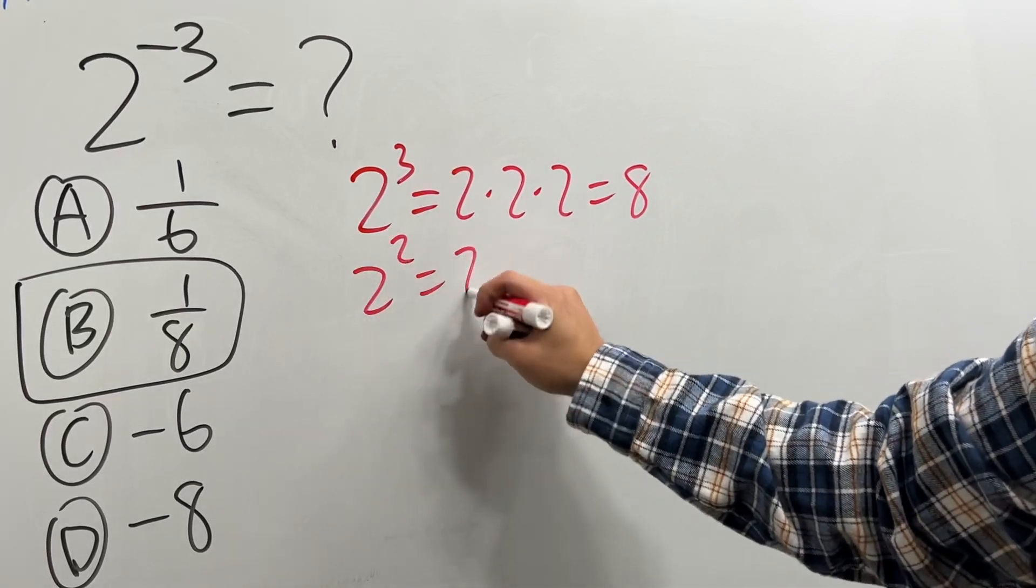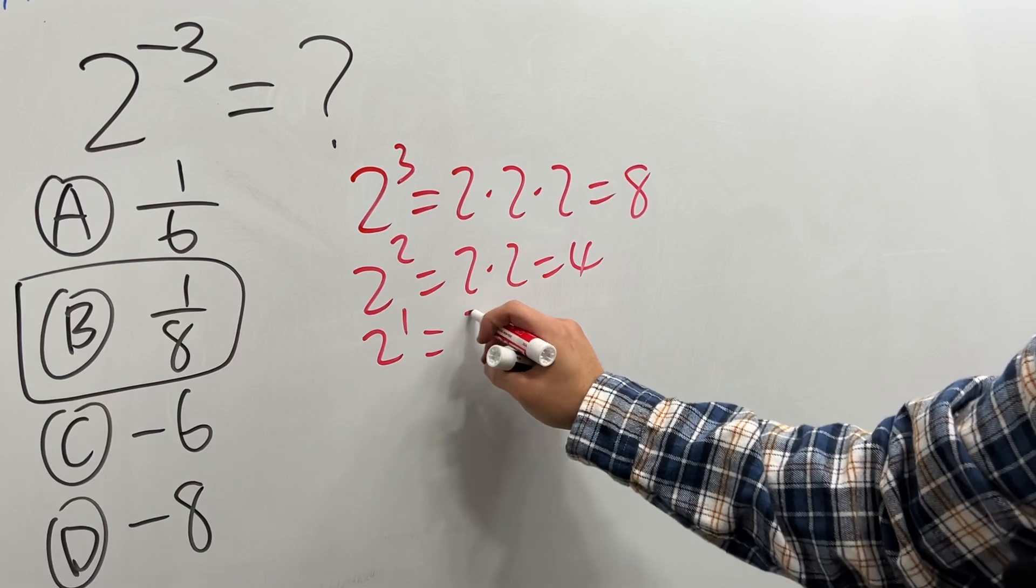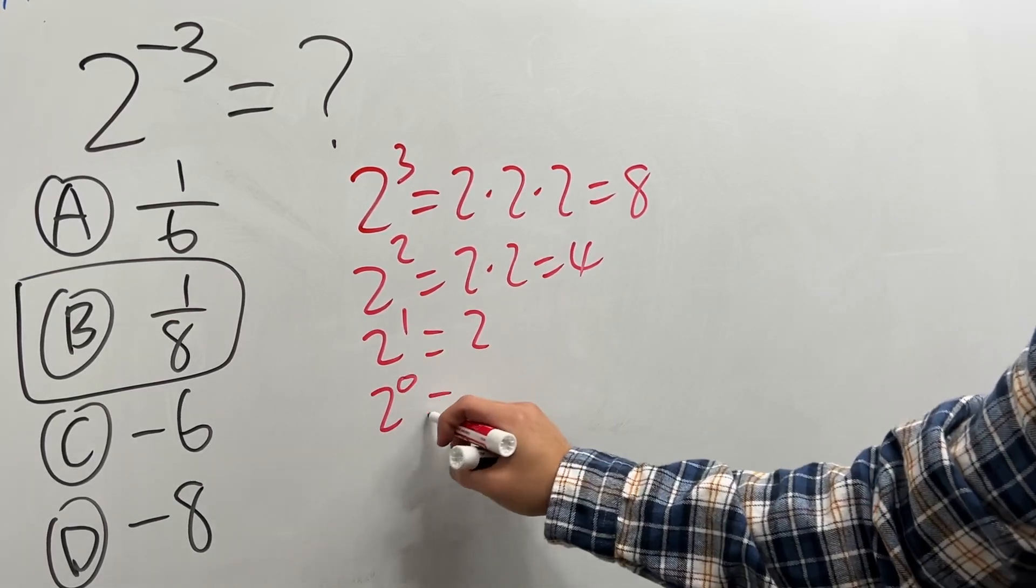And then if I have 2 to the 2nd power, this means 2 times 2, which is 4. If we have 2 to the 1st power, this means 2. And if I have 2 to the 0, this means what? We actually just have 1.